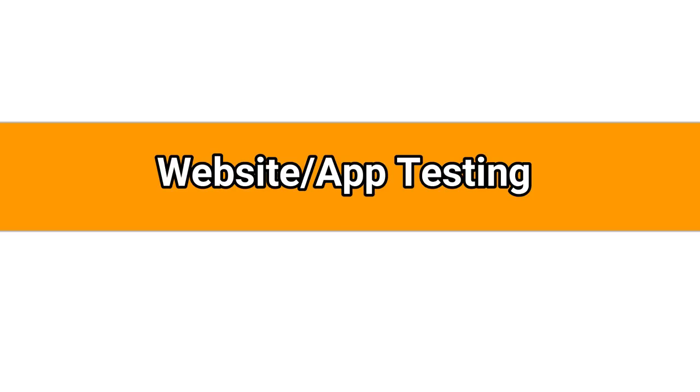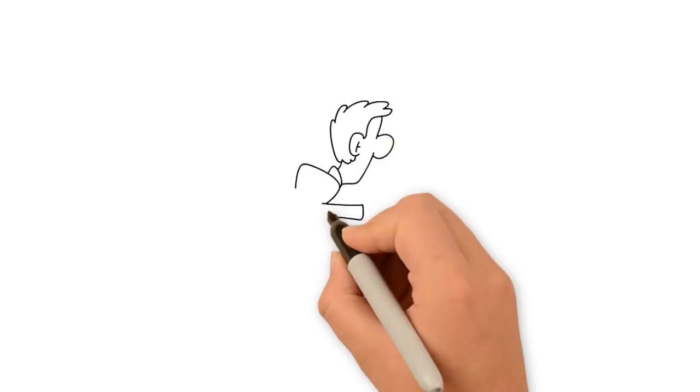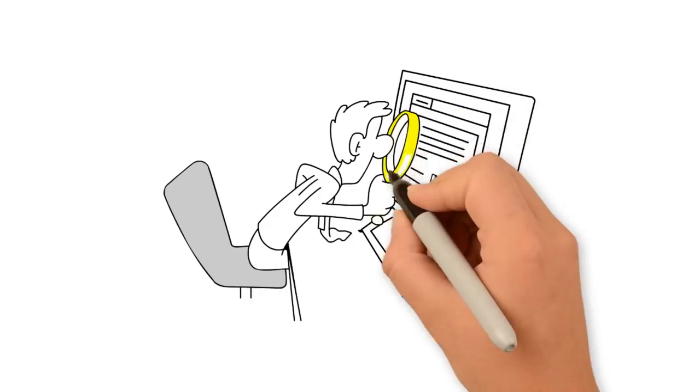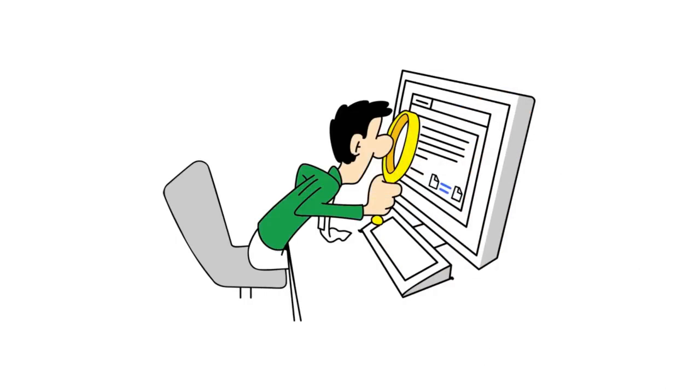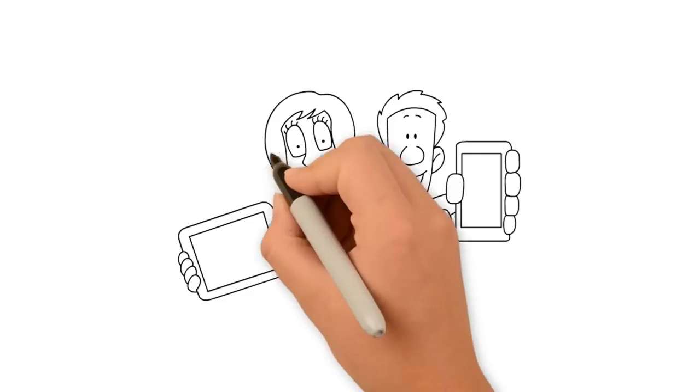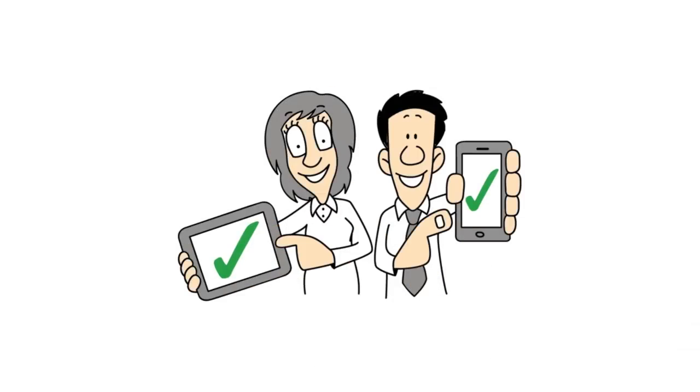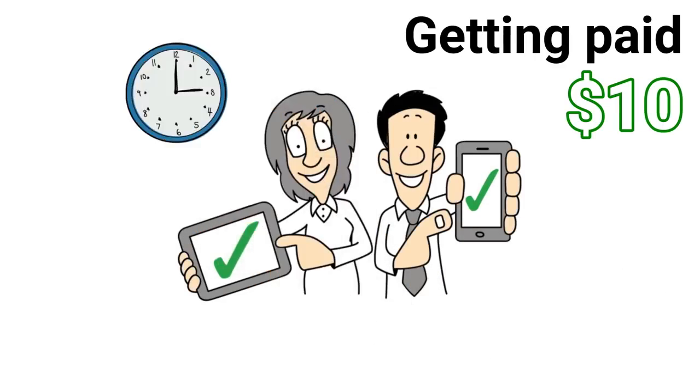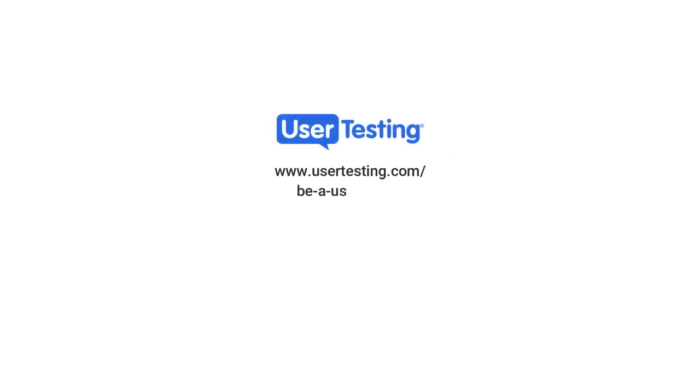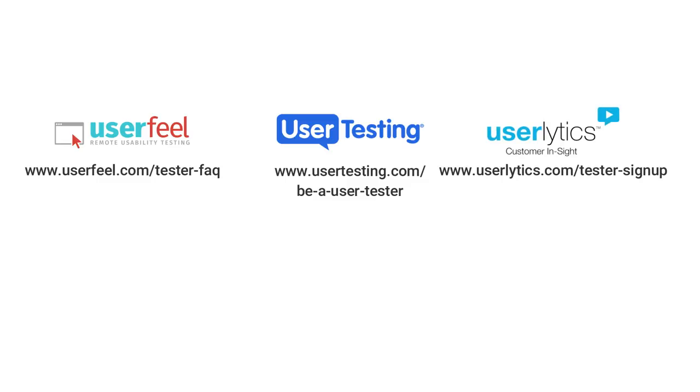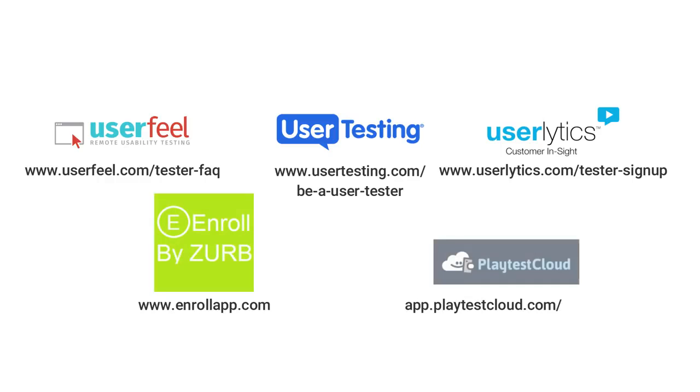Number 10: Website App Testing. Testing websites and apps is not only fun, but also an awesome way to earn some extra money every month. You get to improve websites and apps with your feedback, and getting paid $10 for 10 to 20 minutes of work is pretty good. Usertesting.com/beausertester, Userfield.com/testerfaq, Userlytics.com/testersignup, Enrollapp.com, app.playtestcloud.com/signup.